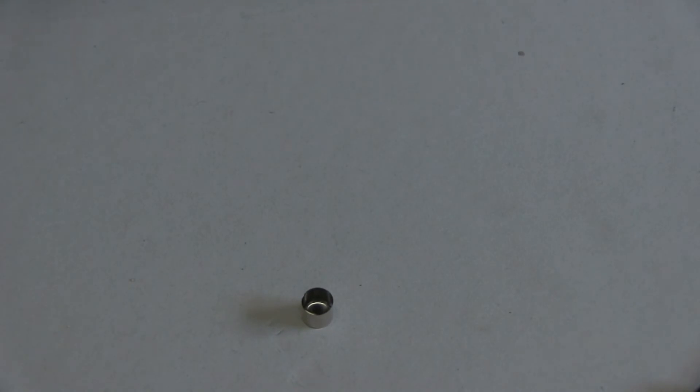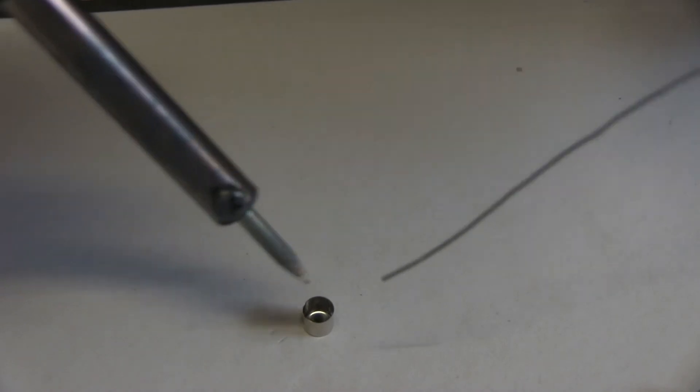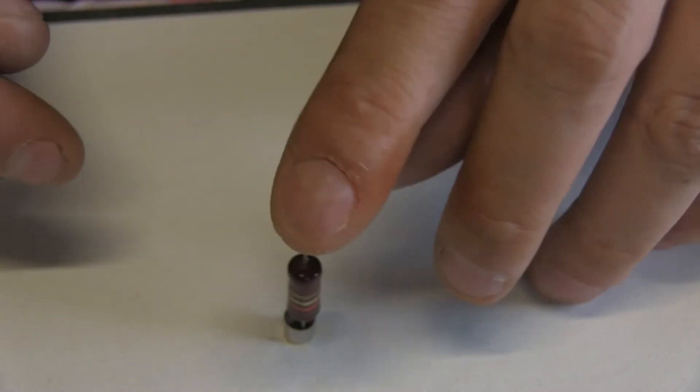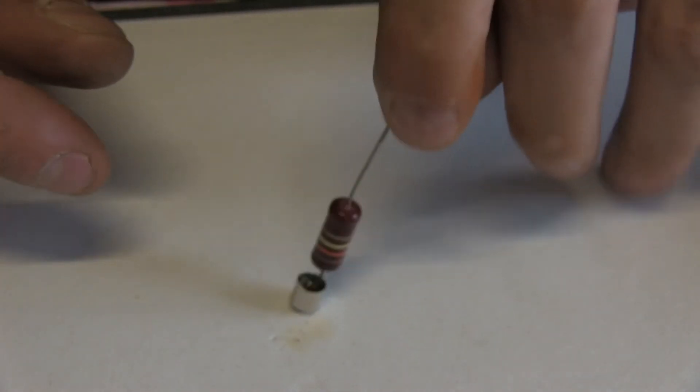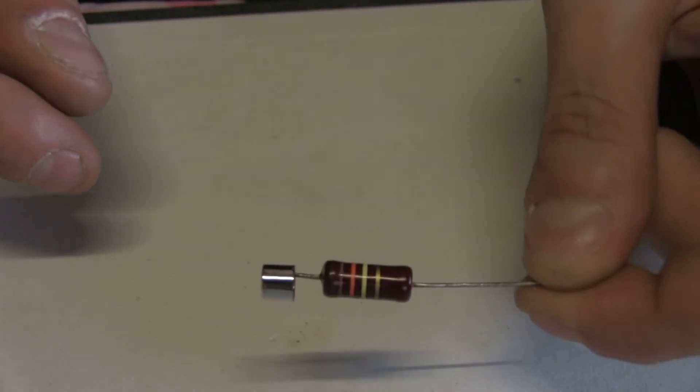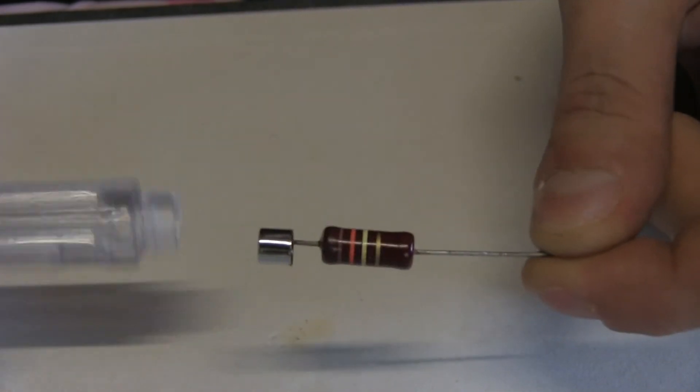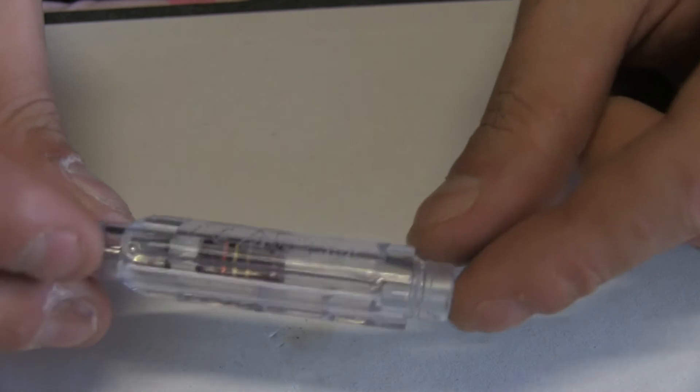There we are, we have solder here. Now I'm going to put some solder inside this cap, the flux is going to help me. I use a generous amount of solder inside here, and now I know for a fact that it's going to be perfectly connected to the tip of the screwdriver.